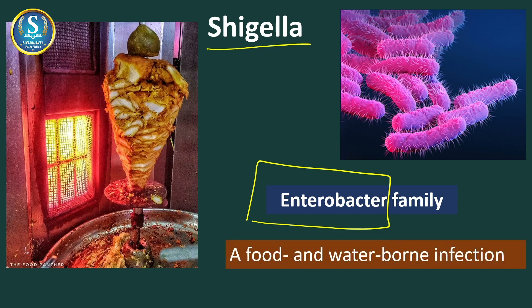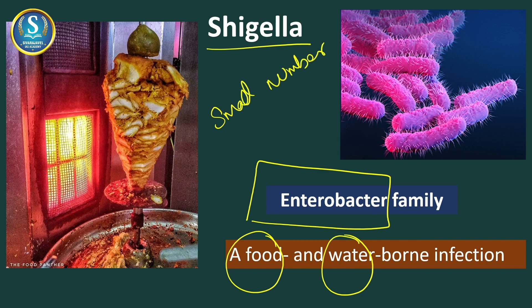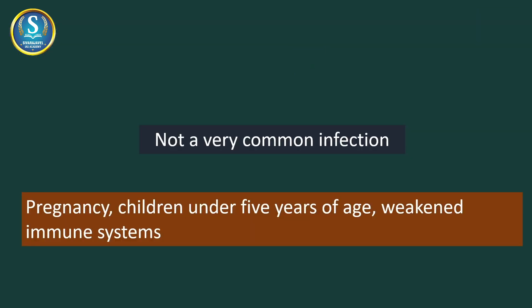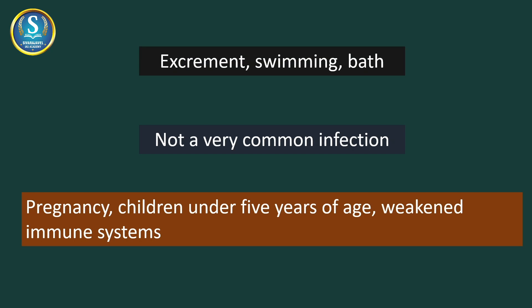This is a food as well as a waterborne infection. It can happen when someone consumes contaminated food, or unwashed fruits or vegetables. This disease is easily spread by direct or indirect contact with the excrement of the patient. UPSC is known to ask whether a disease is communicable and whether it spreads. This disease spreads from one human to another by the excrement of the patient. Apart from that, the infection can also reach you when you swim or bathe in contaminated water.